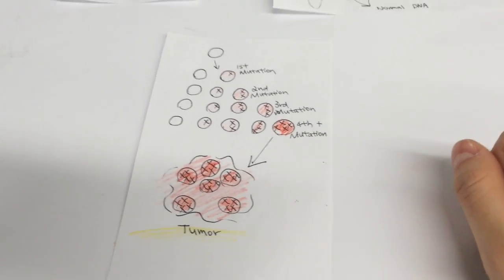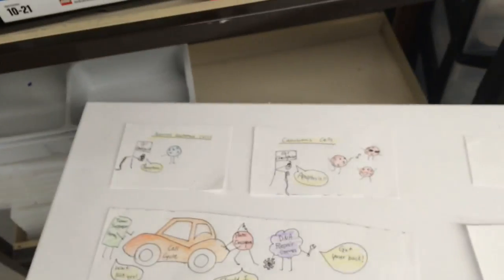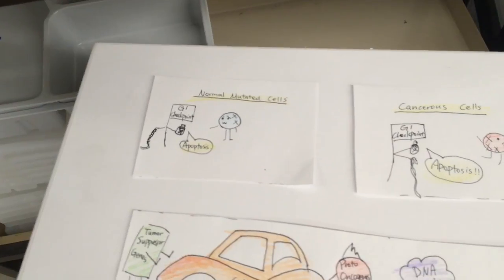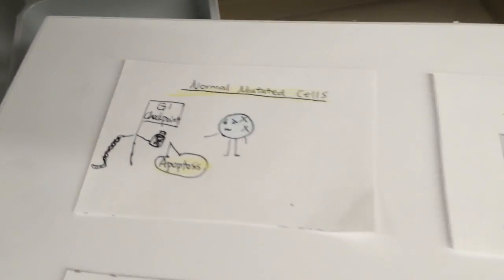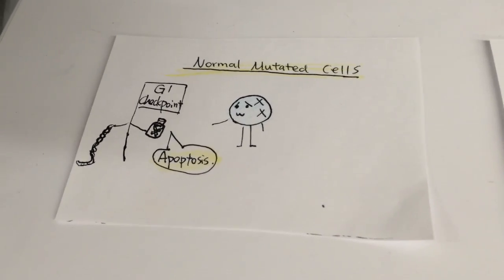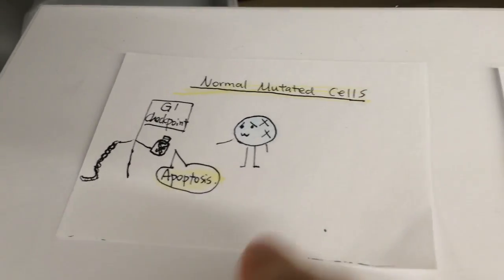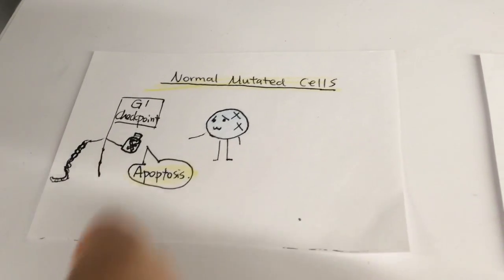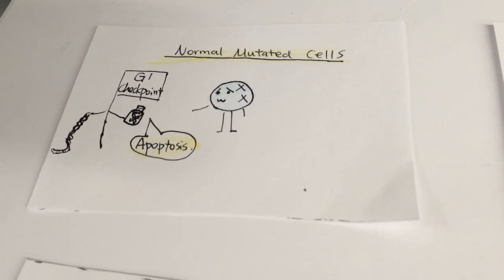So when is a cancer cell actually cancerous? What kind of mutations will make a cell evade the cell cycle control? Normally, when the cell is mutated and thought as harmful by the cell cycle checkpoint mechanisms, the cell cycle is stopped, or the cell is ordered to commit suicide, a process called apoptosis.